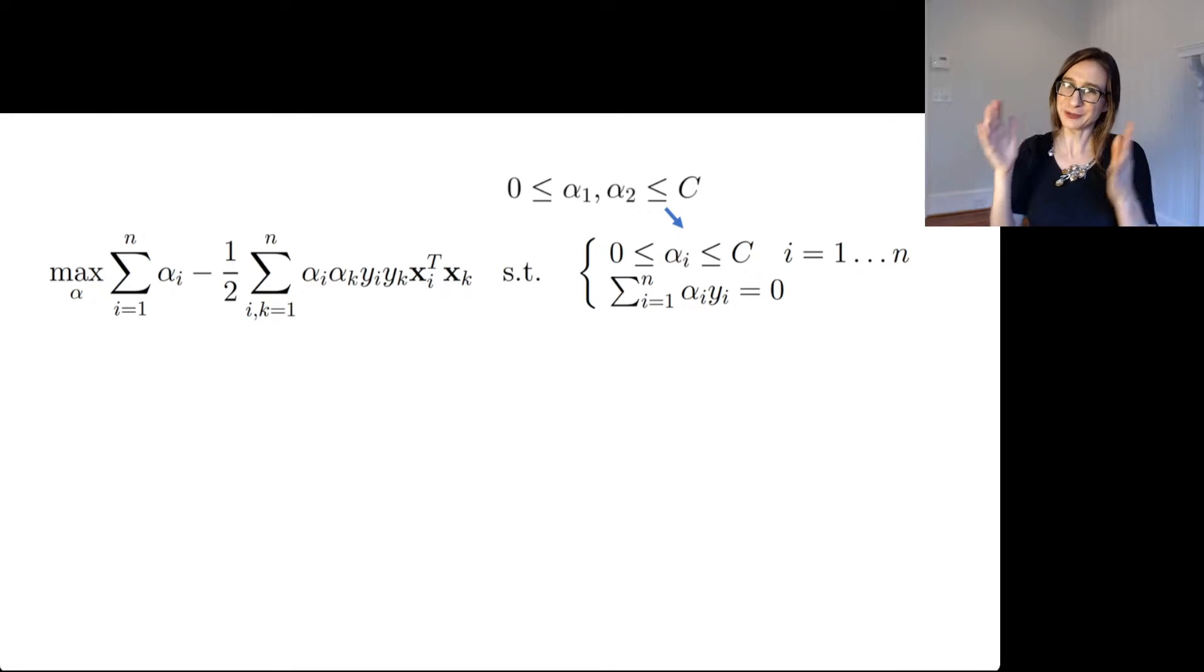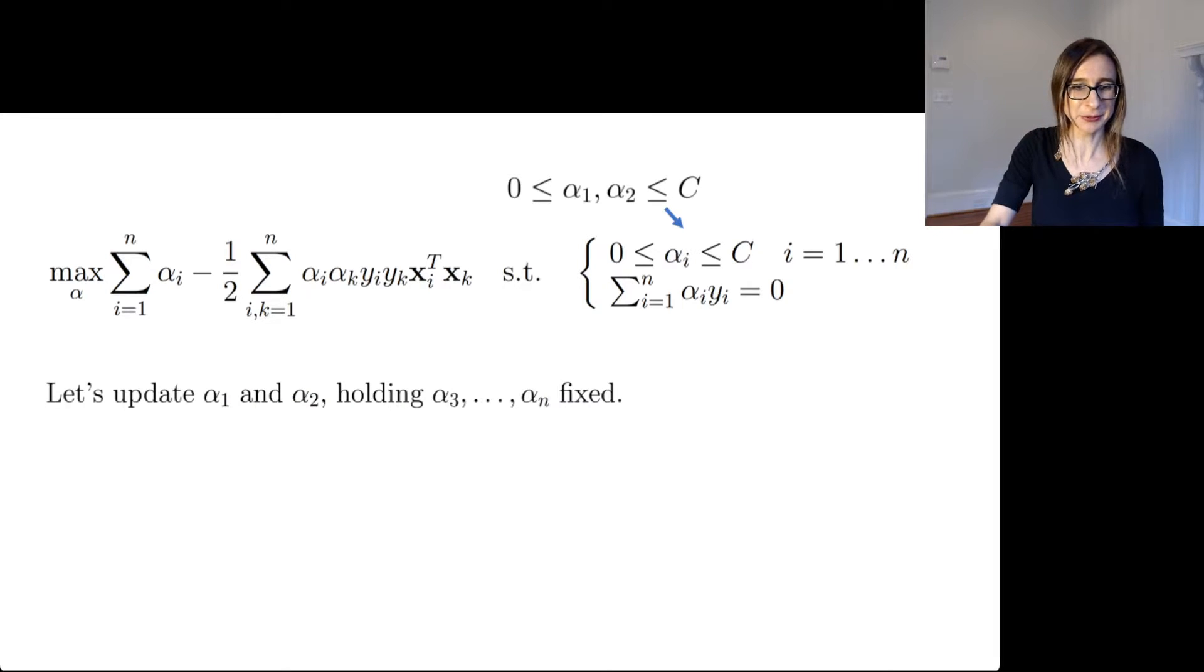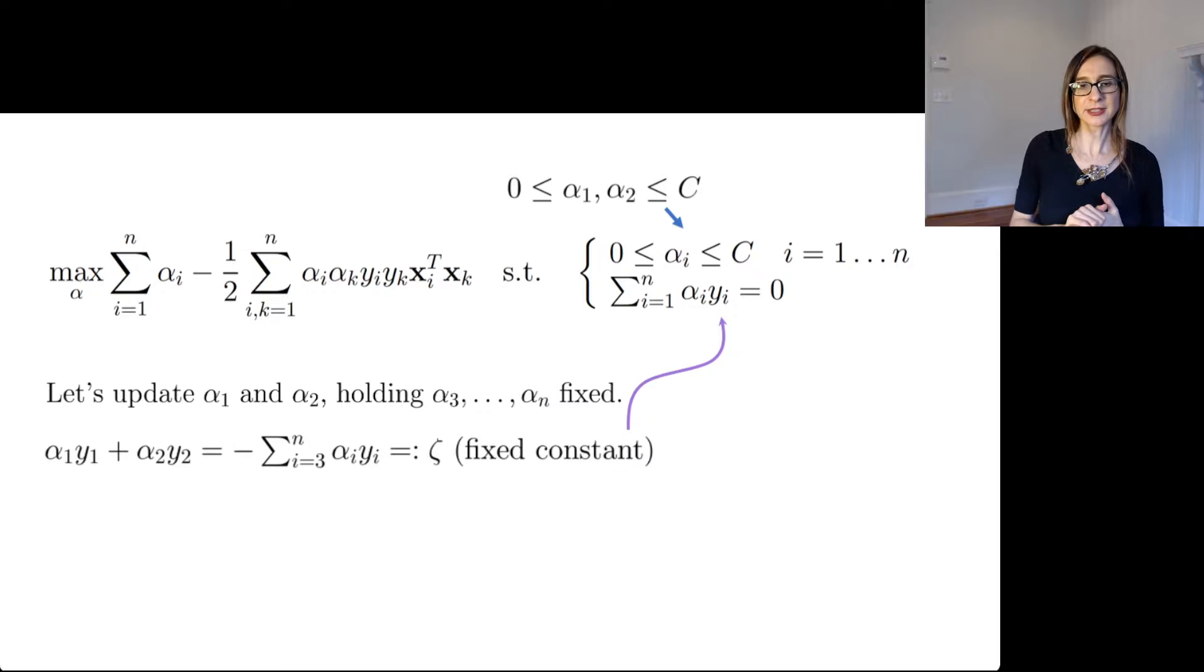So let's adjust alpha 1 and alpha 2 this time. Maybe that'll work. And it does work. Because you still have a degree of freedom and you can still stay within the feasible region. So let's update alpha 1 and alpha 2 holding the other alphas fixed. So we grab that constraint there, and we'll say that alpha 1 y1 plus alpha 2 y2 equals some stuff, some function of the other alphas.